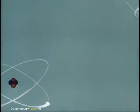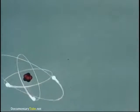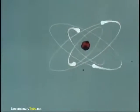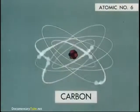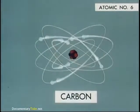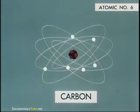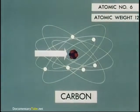Going up the ladder, we find elements with atoms that become progressively complicated, with more electrons and increased numbers of protons and neutrons in their nuclei. For example, a neutral carbon atom with an atomic number of six has six electrons. In the nucleus are six protons plus six neutrons, so the atomic weight is twelve.